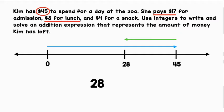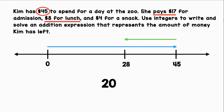Then she spends $8 for lunch. We can represent this with plus negative 8. Now, looking at these two numbers, we know that our sum is going to be positive. That's because 28 has the larger absolute value, and it is positive. So, let's find the difference of the absolute values. 28 minus 8 equals 20. It's $20 after lunch.